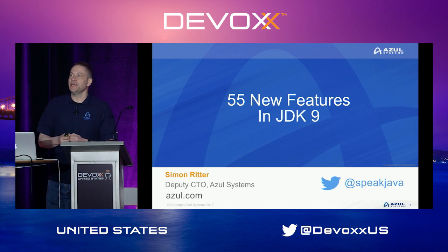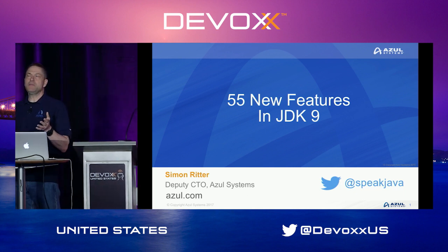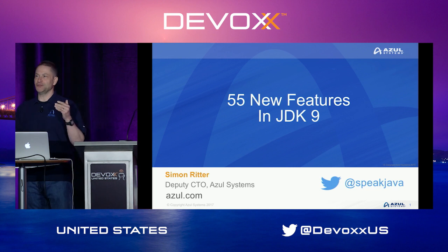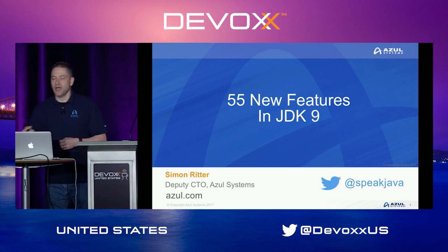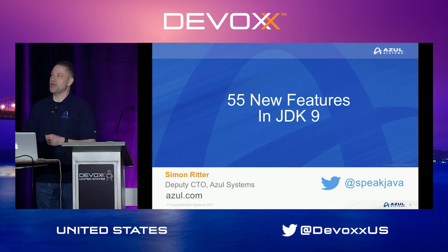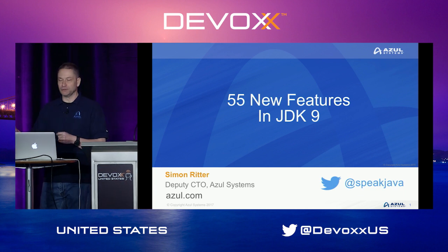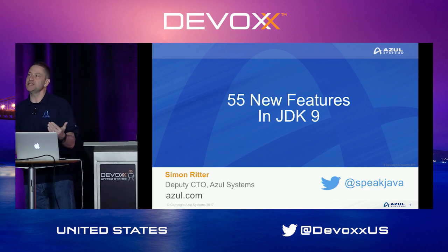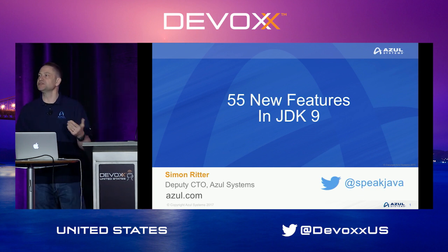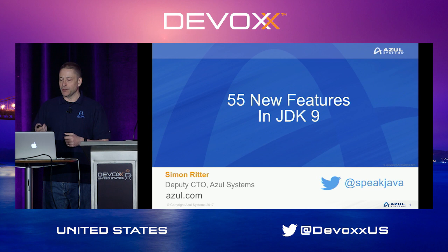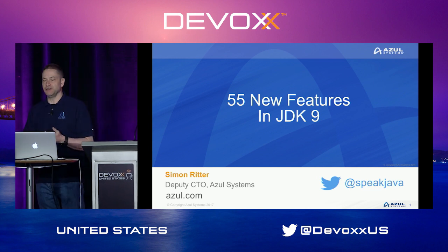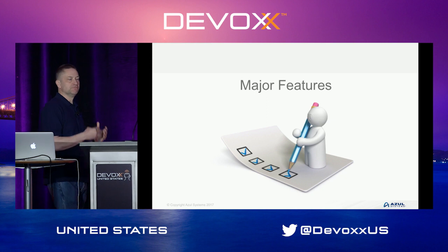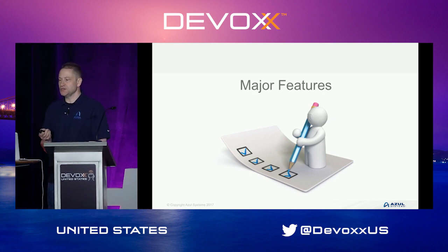JDK 9 is about four months away from when it's going to be released. I say that with confidence that July the 27th is when JDK 9 will be released. It is now feature complete, sort of. There's still some work going on in the area of Jigsaw, but from the point of view of the rest of the features, everything is actually in there. They're now on the ramp-down phase, only fixing critical bugs.